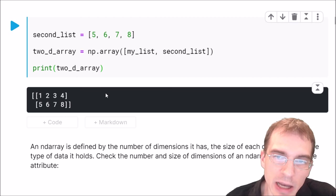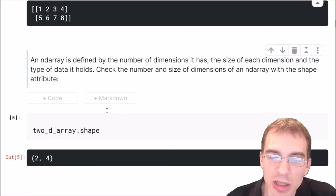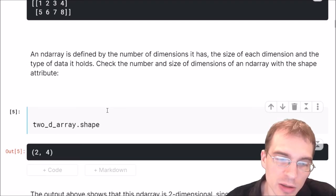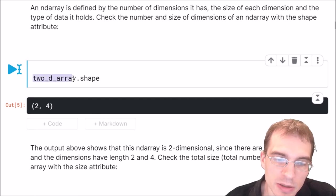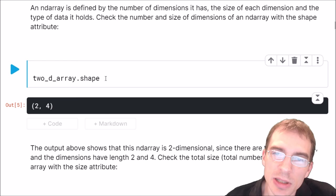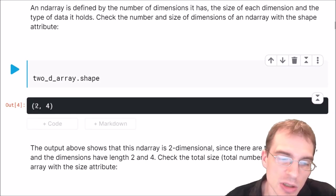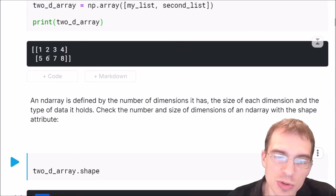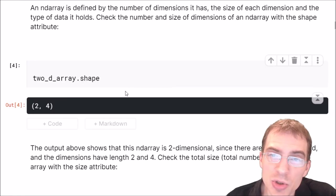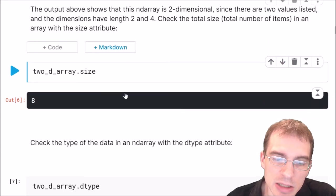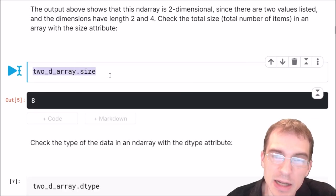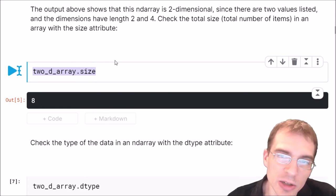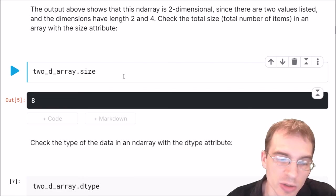A numpy array is defined by the number of dimensions it has and the size of each of those dimensions and you can check that with the dot shape attribute. If we call the name of the array dot shape that will tell us what the size of each dimension is. This numpy array is two by four and we can see above that means it had two rows and four columns. You can also check the total number of items in a numpy array with the dot size attribute. If we run dot size in our two by four array we get eight and you can calculate this by multiplying all the different dimensions together.